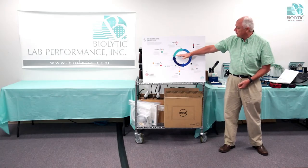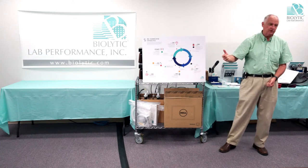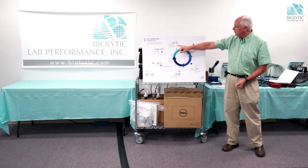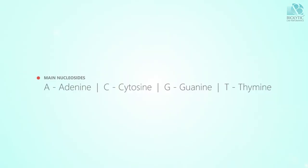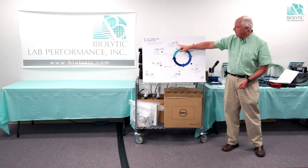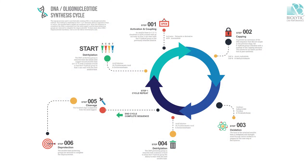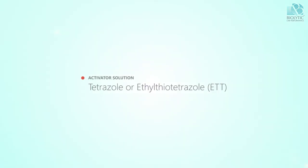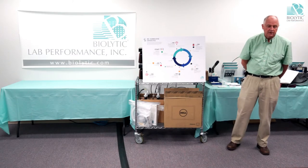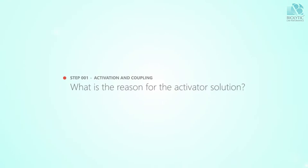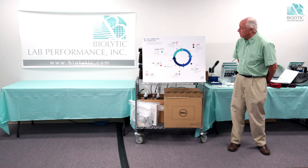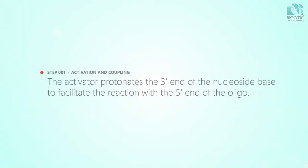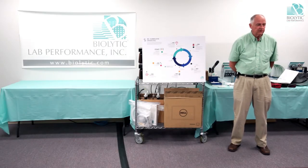Once the blocking group is removed, the five prime end is available for adding the next nucleoside. To do that, we bring in the nucleoside of choice for the particular sequence we're trying to produce, and mix it with an activator reagent — tetrazole was the original one, but ETT (ethylthiotetrazole) is commonly used these days. The function of the activator is to protonate the three prime end of the nucleoside and make it active so it can react with the available five prime end on the solid support.